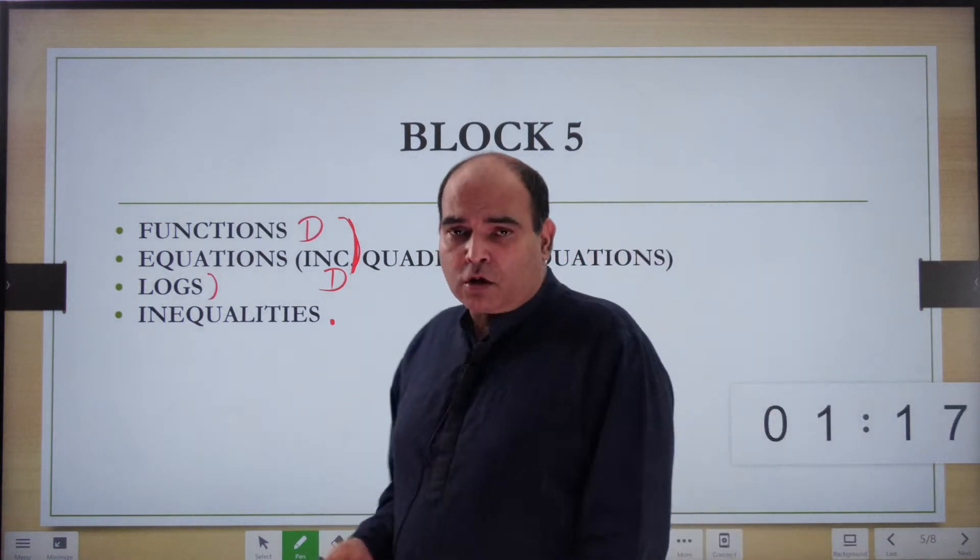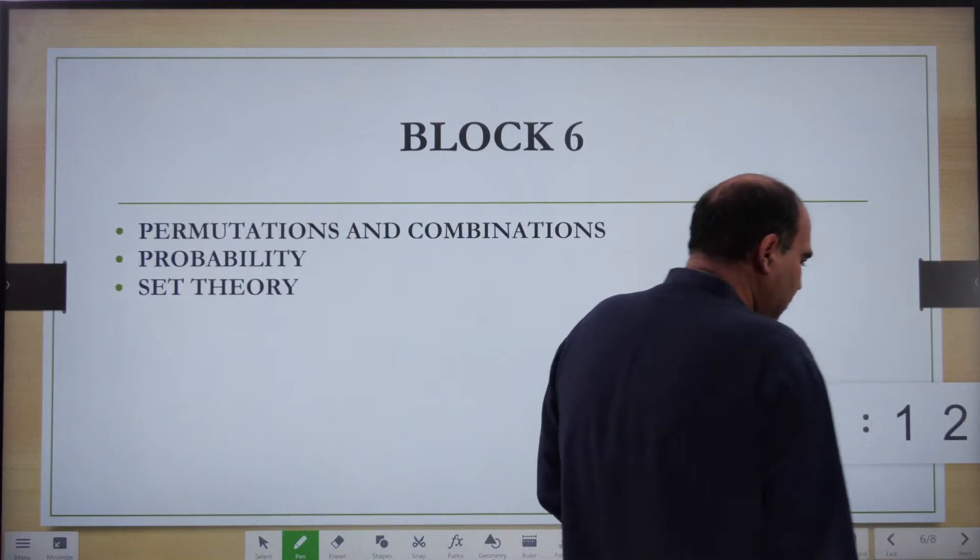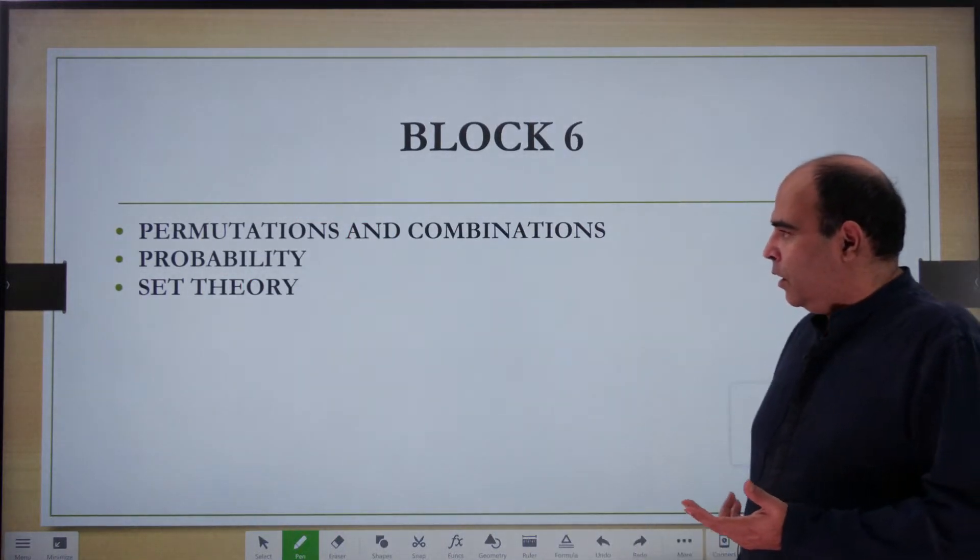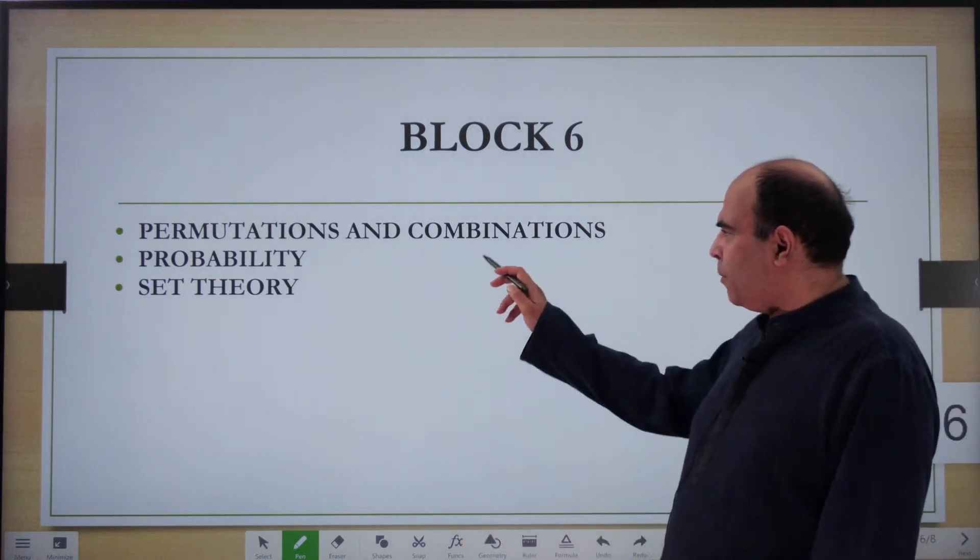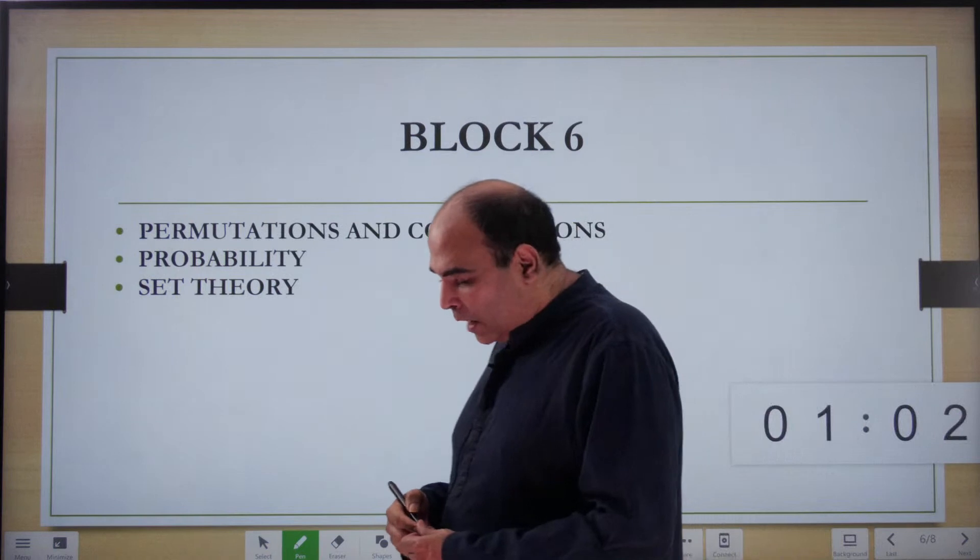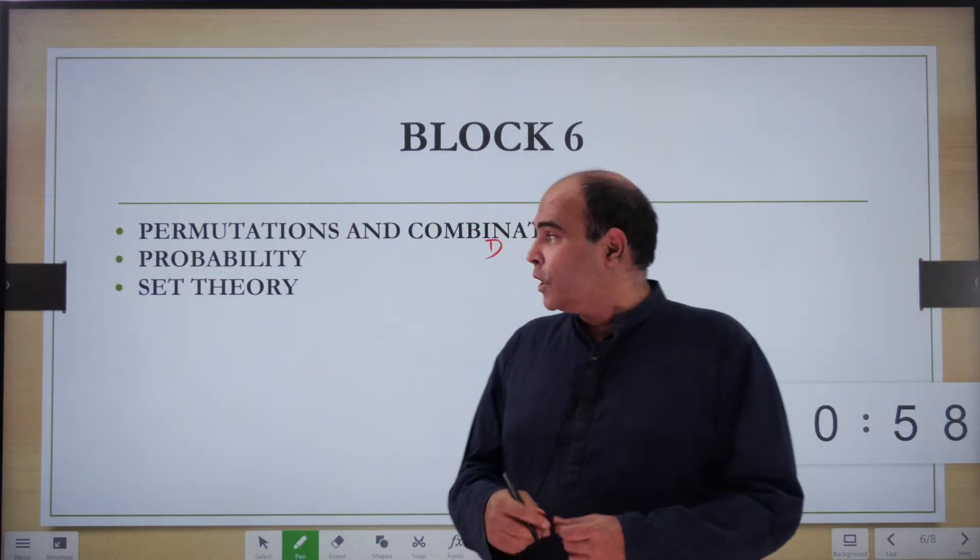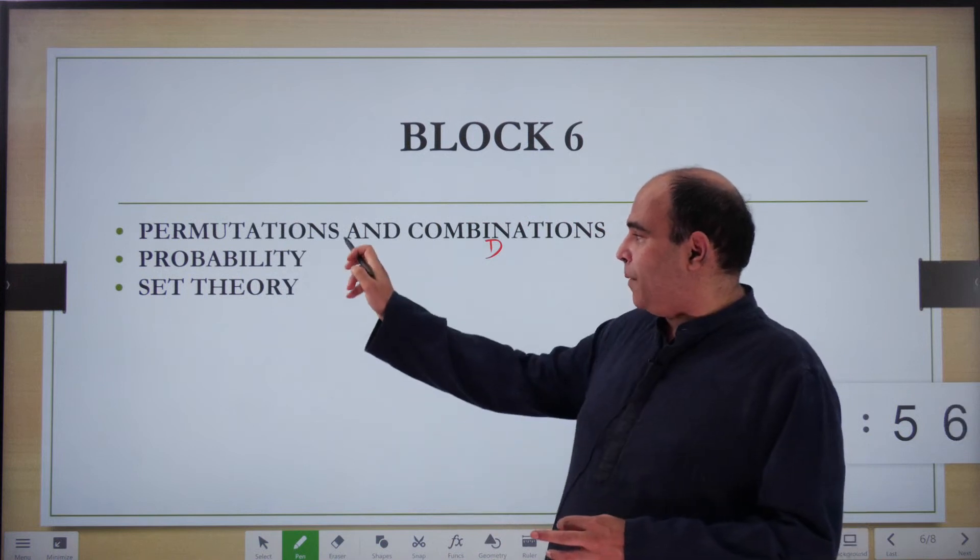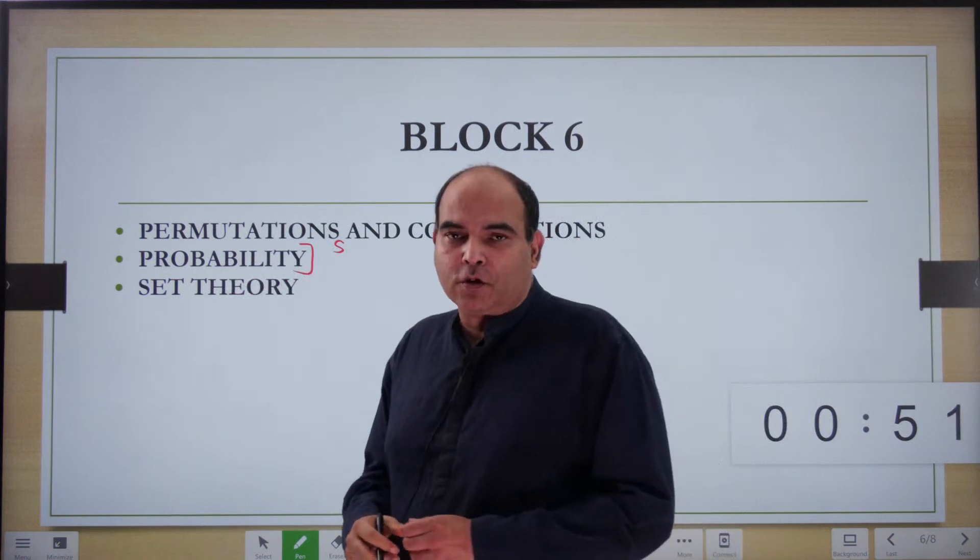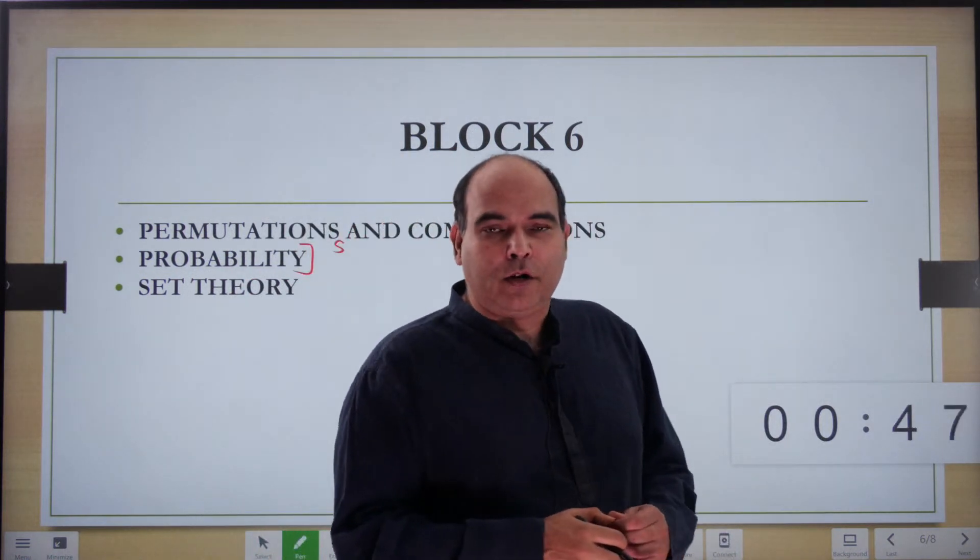Block 6: you have a choice. Permutation combination is a good chapter to study, it's interesting. CAT may sometimes give you two or three questions, but other times zero also. So even if you just do a shallow dip into permutation combination and probability - somebody had commented on one of the previous videos - probability, you'll be surprised to know, has never come in CAT in the last 10-odd years.